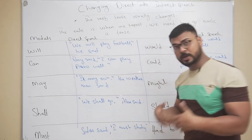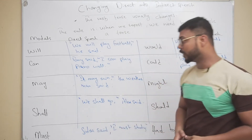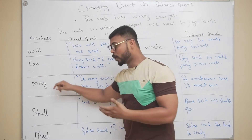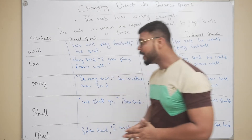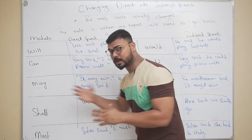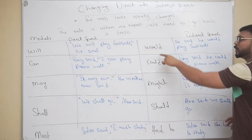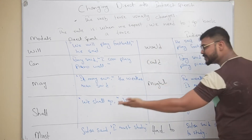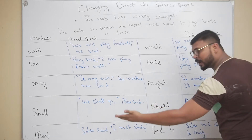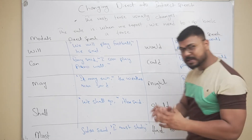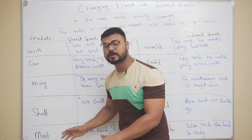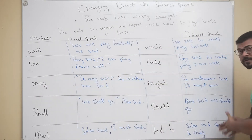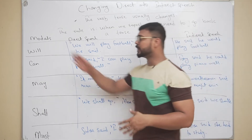Now let's go over modal verbs — what happens when we convert direct to indirect speech with modals. If you have 'will,' 'can,' 'may,' 'shall,' or 'must,' they are converted as follows: will → would, can → could, may → might, shall → should, and must → have to.